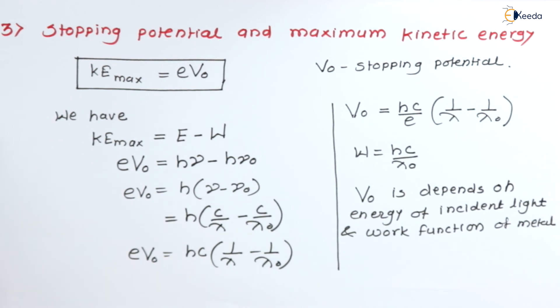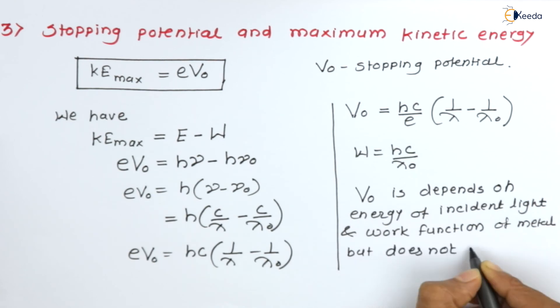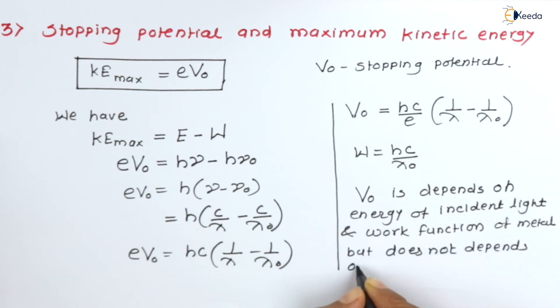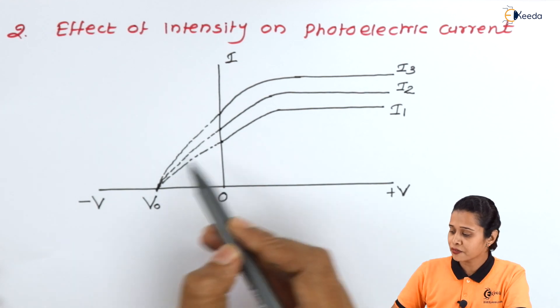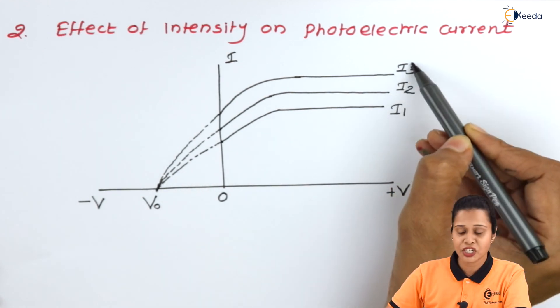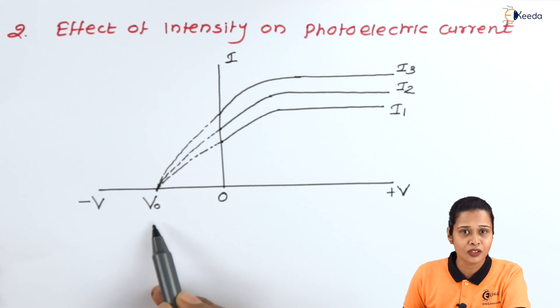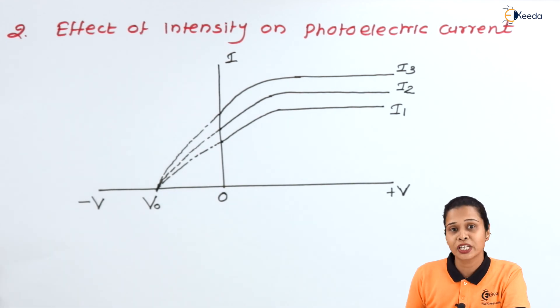Stopping potential does not depend on the intensity of light. As seen in the previous characteristic, intensity was changing but stopping potential remained constant. Stopping potential is not dependent on the intensity of incident light. These are the basic characteristics of the photoelectric effect. Thanks for watching this video. Stay tuned with Ekeeda and please subscribe.